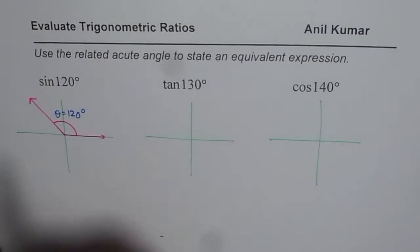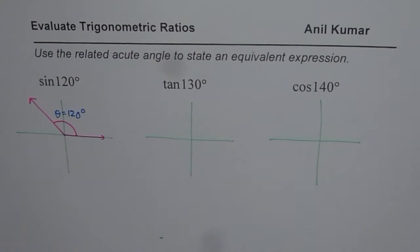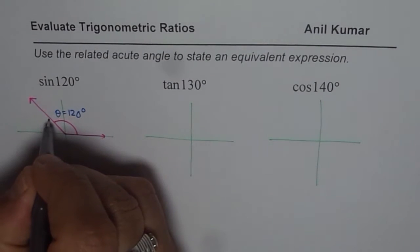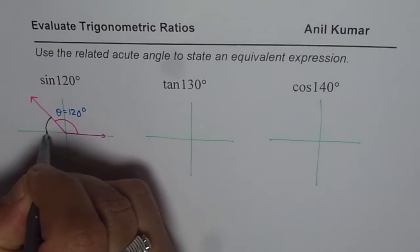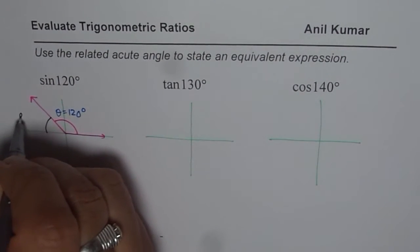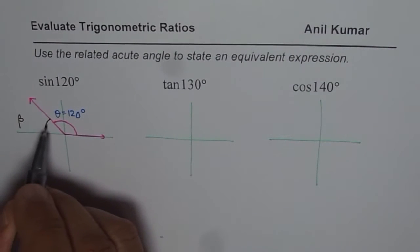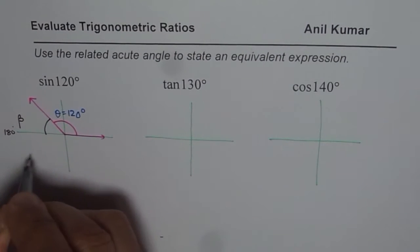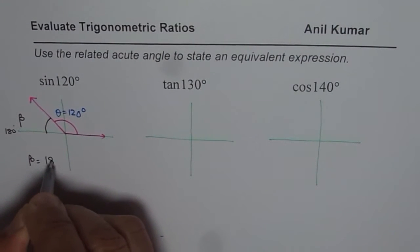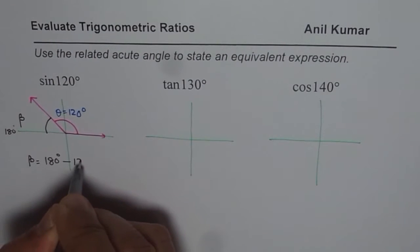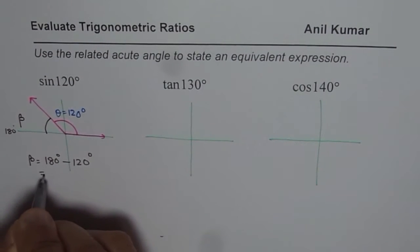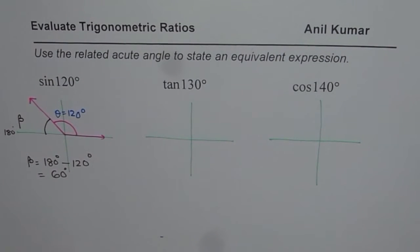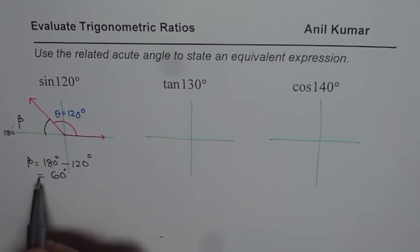The related acute angle is always the angle from the horizontal line — it is less than 90 degrees. We normally use beta for this. As you can see, beta and 120 degrees together total 180 degrees. So beta equals 180 degrees minus 120 degrees, which gives you 60 degrees. The related acute angle is 60 degrees.